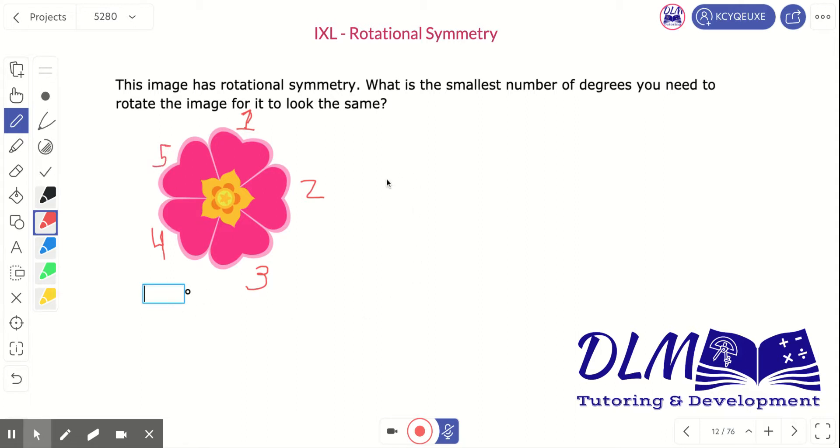So, I'm going to divide 360. I'm going to divide it by five sections to find out how many degrees. This gives me 72 degrees. I would need to rotate it 72 degrees in order for it to look the same.